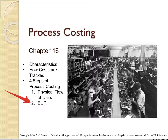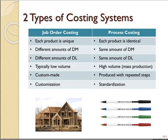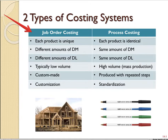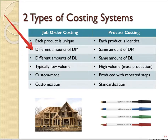There are two types of costing systems: job order costing from chapter 15 and process costing in chapter 16, and they are very different. In job order costing every product is unique — just like the Lego example in class where every group made a different vehicle. Each product required a different amount of direct materials, as you counted the pieces, and a different amount of direct labor, as you timed yourselves.